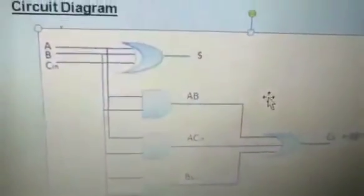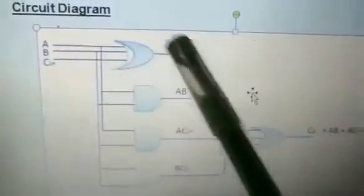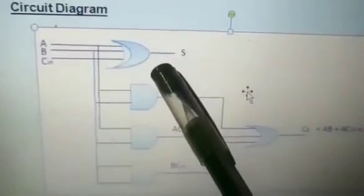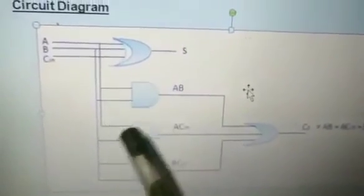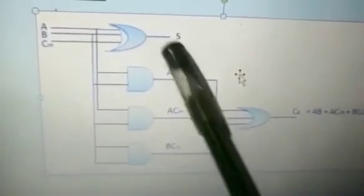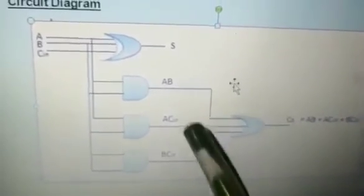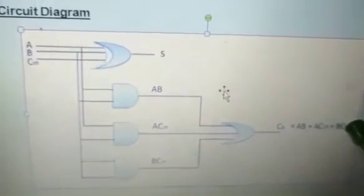Looking at the circuit diagram: inputs A, B, and C-in all pass through the XOR gate. The expressions AB, AC-in, and BC-in are the expressions for the carry part. These feed back into the XOR gate and we get the final sum expression.